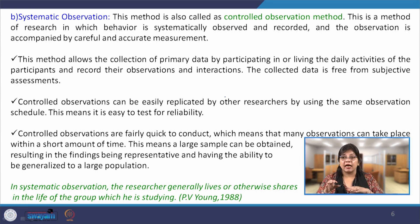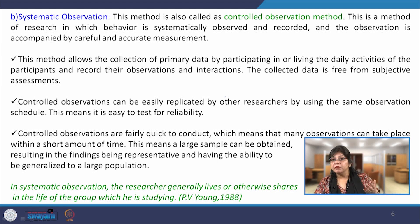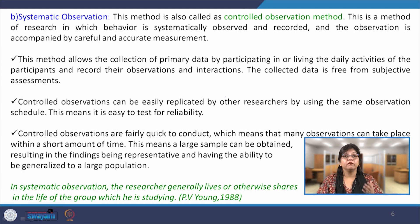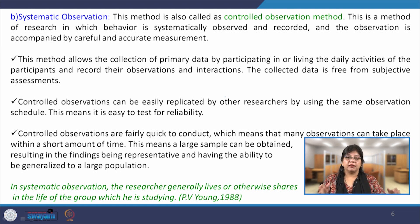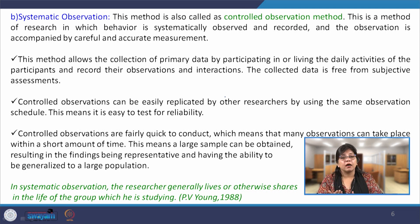The researcher participates in the daily activities, observes all the behavior of the group members, and tries to collect all information as primary, first-hand data. This collected data is free from subjective assessments. When we are in proximity with the subjects we are studying, we get a better scope to understand human behavior in a very objective manner. Controlled observation can be easily replicated by other researchers using the same observation schedule, making it easy to test for reliability. When we have primary, first-hand information, it becomes easy for the researcher to replicate the same study on another sample.